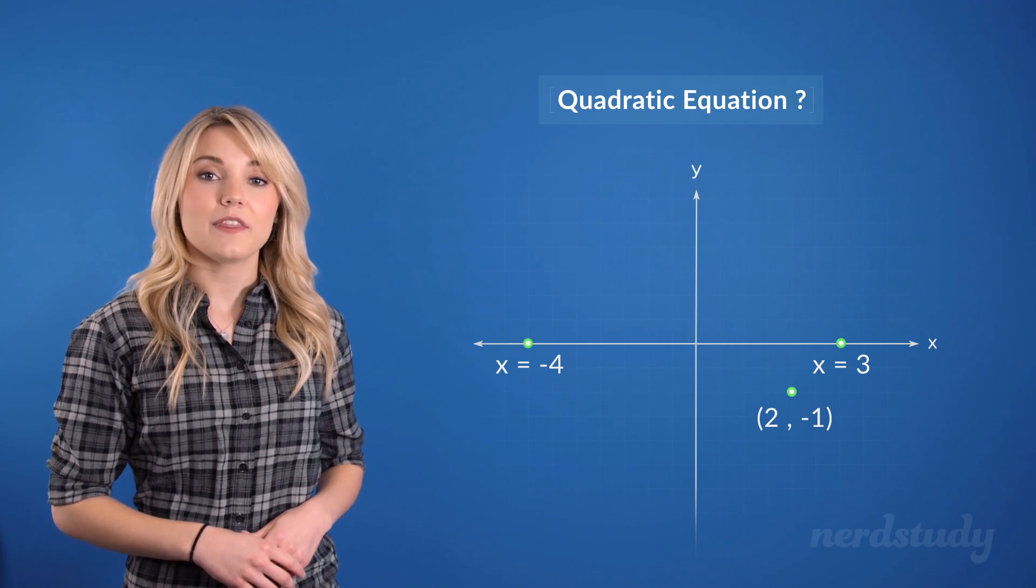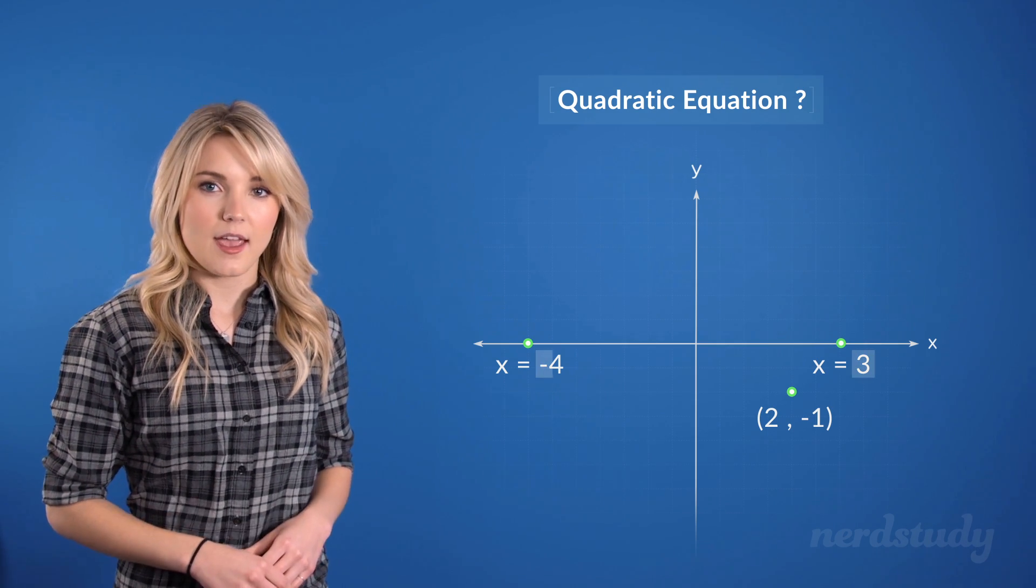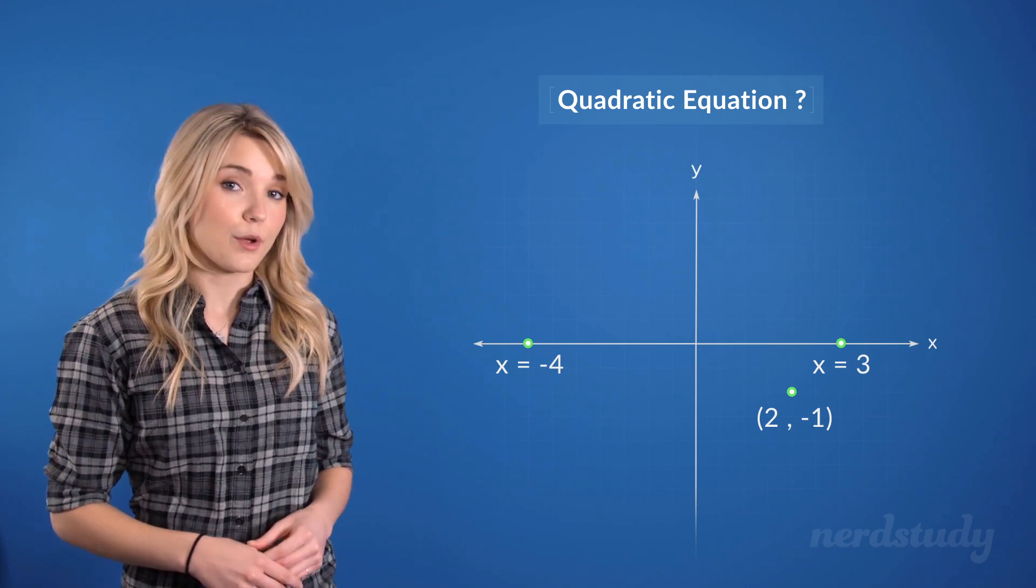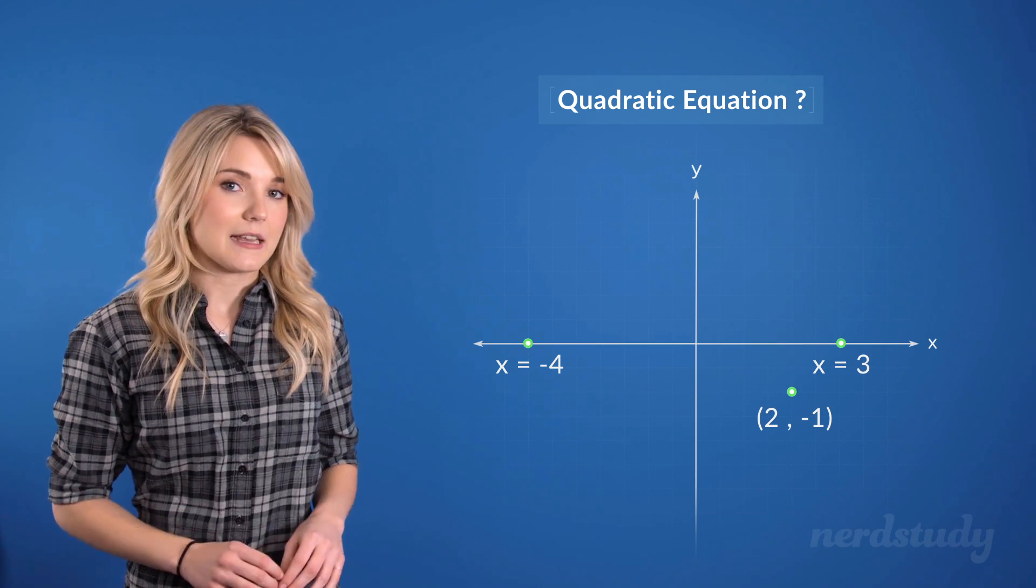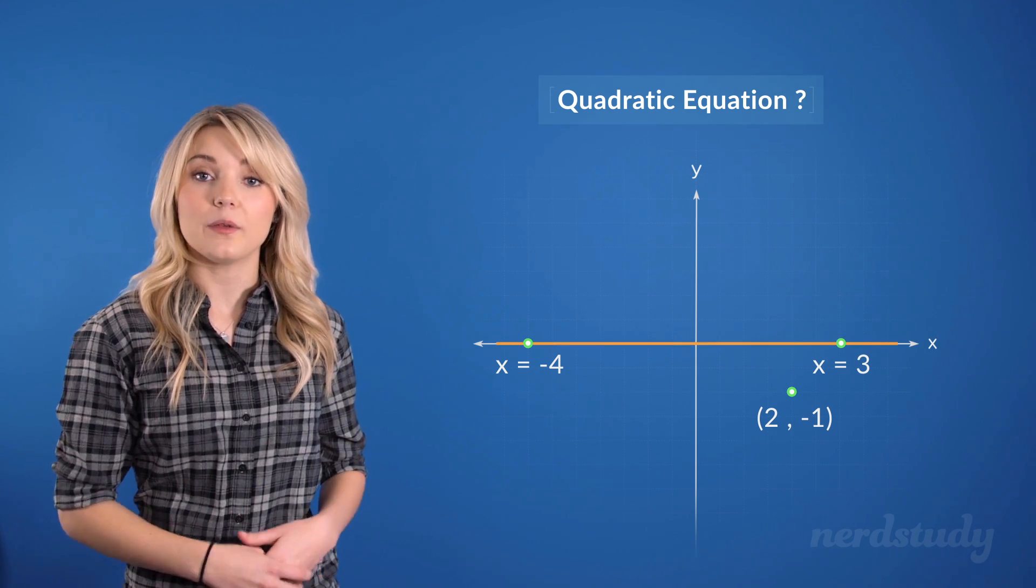Well, let's start off with the idea of being given the roots. What does it mean when 3 and negative 4 are our roots or our zeros? What this means is that when x is equal to 3 or negative 4, y will equal 0.